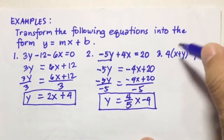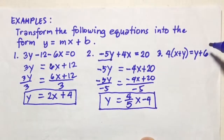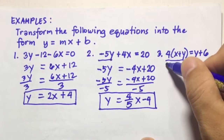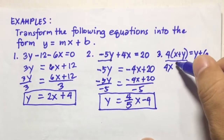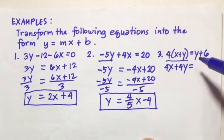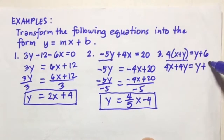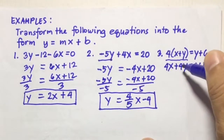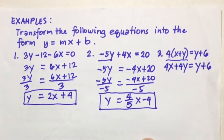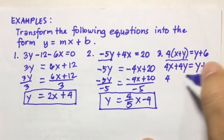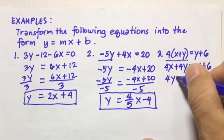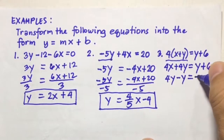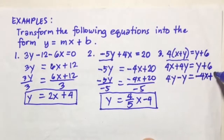Number 3: 4 times the quantity of X plus Y equals Y plus 6. We distribute first: 4 times X is 4X, 4 times Y is 4Y, equal to Y plus 6. Then we transpose Y to the left side and 4X to the right side, giving 4Y minus Y equals negative 4X plus 6.